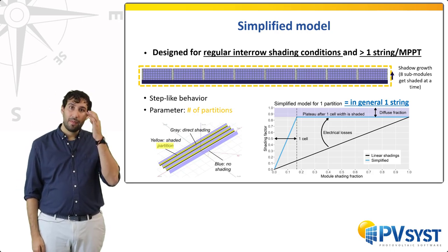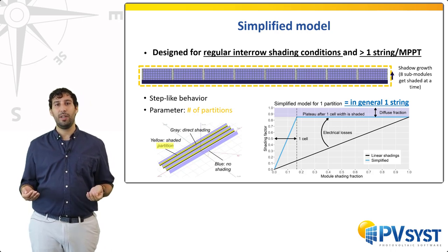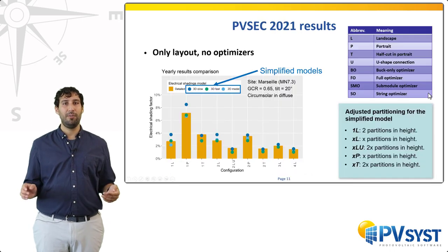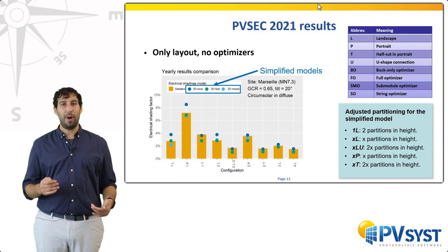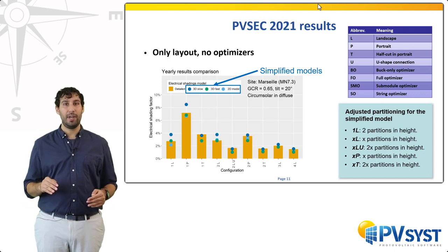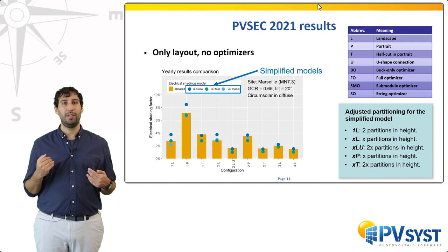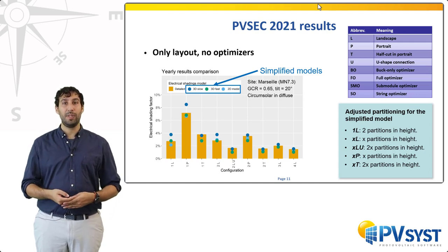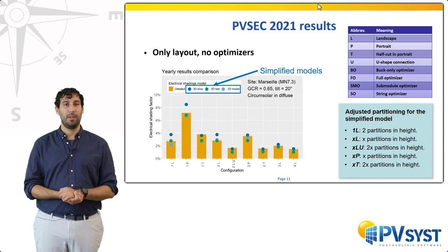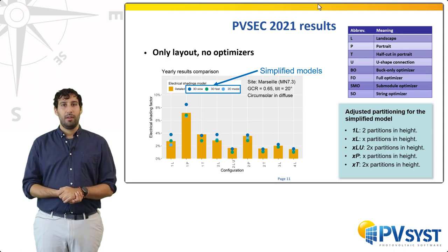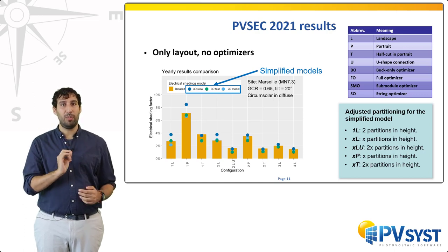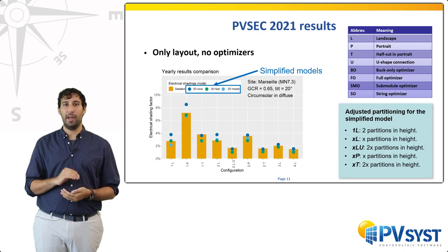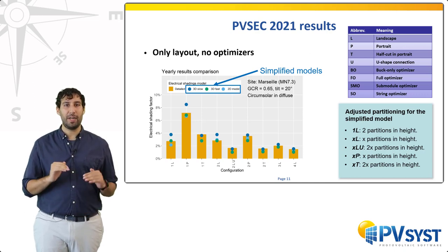At EU PVSEC 2021, we presented the following results. In these plots, we show the yearly electrical shading factor for different configurations shown as different bars. This electrical shading factor is the measure of the mismatch caused by the inter-row shadings throughout a year. All cases have been modelled with a GCR of 0.65 and a tilt of 20 degrees for a site in Southern France. In yellow, you see the results with the detailed module layout reference model, which serves as our best model. You can see that some configurations are more effective than others at mitigating the shading losses, corresponding to the lower bars in the diagram. With the blue and green dots, we also show the results using the simplified model. On the right, we present the number of partitions in the height of the table that lets the simplified model best match the reference for each case.